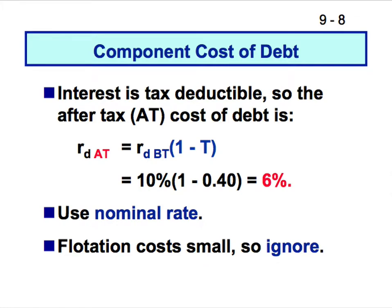Interest is tax deductible from a company's point of view — the interest they pay to service their bonds is tax deductible. The after-tax cost of debt is: RD(BT) × (1 − T). If the corporate tax rate is 40%, then the after-tax cost of debt is 6%. So it doesn't actually cost the company 10% to issue debt — rather 6%. You really need to know that and factor it into your calculations.